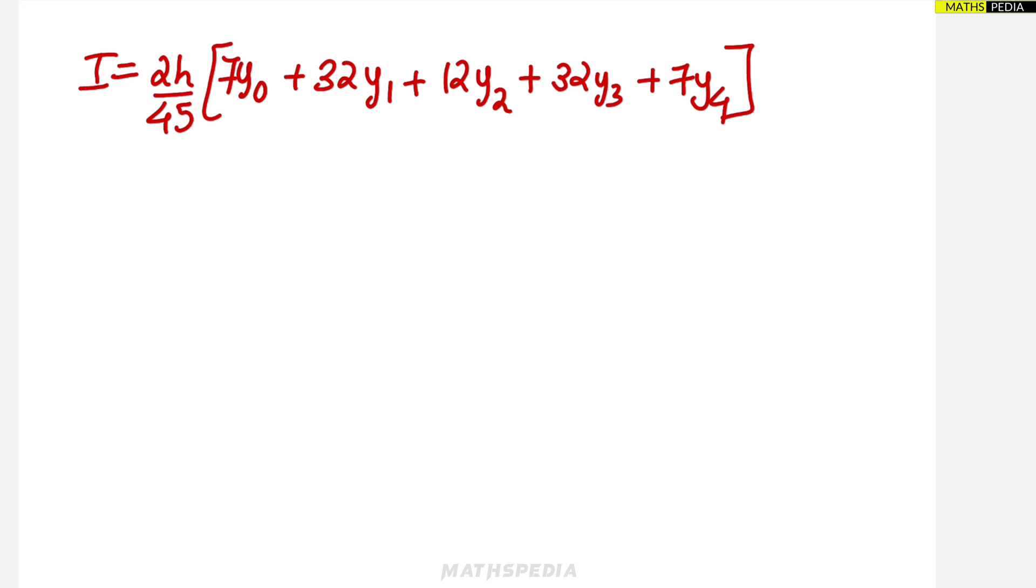Next you have to substitute the values. The definite integral I is equal to 2 times h value, which is nothing but 0.3, by 45, and then substitute all the values.